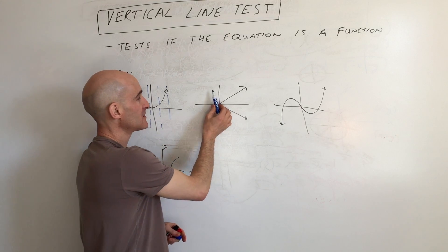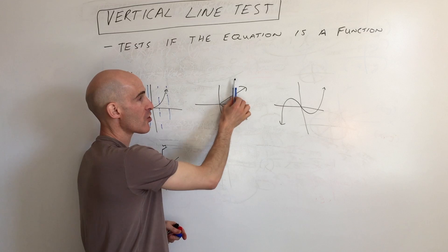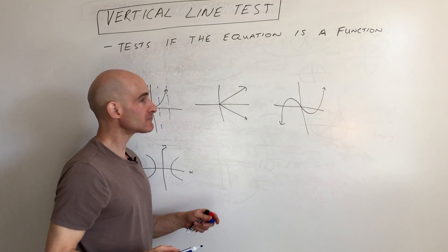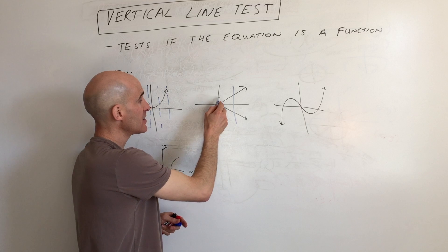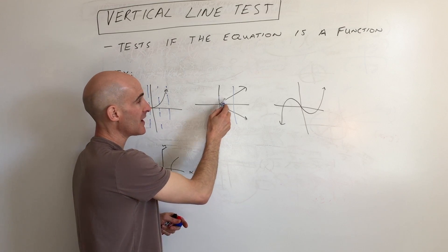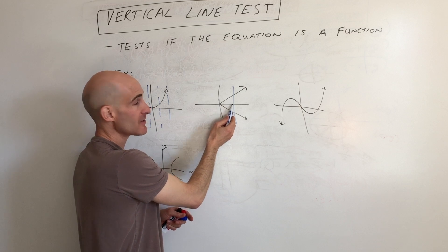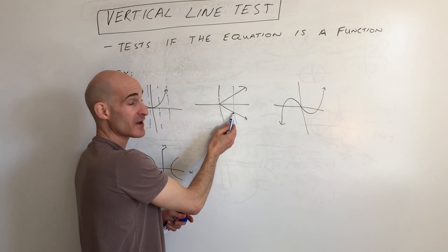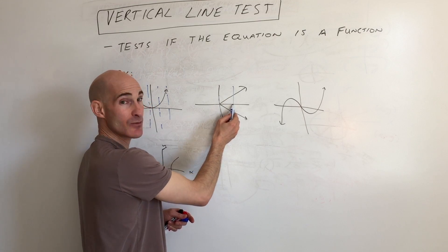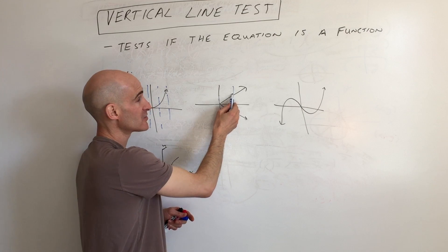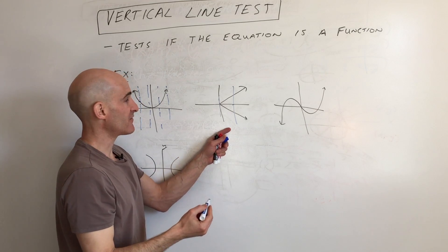Let's look at this one over here. Take that vertical line and scan from left to right — does it cross the graph at more than one point? Here it only crosses at one point, that's okay, but over here it's crossing at more than one point. That means when x is, say, positive 2, y could be negative 2 or positive 2. For this input there's more than one output — that's not a function, so this fails the vertical line test.